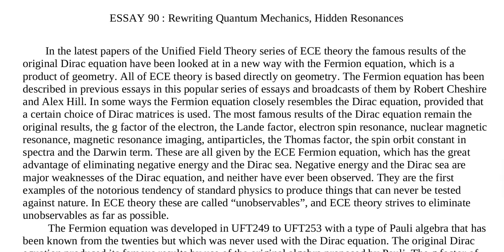In some ways the Fermion equation closely resembles the Dirac equation, provided that a certain choice of Dirac matrices is used. The most famous results of the Dirac equation include the g-factor of the electron, the Landé factor, electron spin resonance, nuclear magnetic resonance, magnetic resonance imaging, antiparticles, the Thomas factor, the spin-orbit constant, the spectra, and the Darwin term.